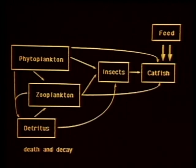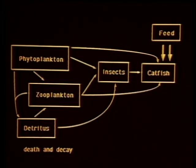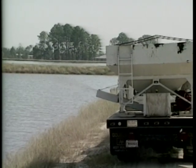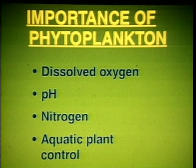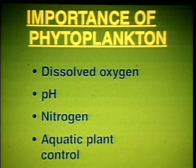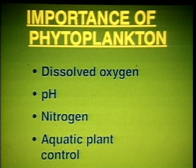Shown here is the food web present in a typical catfish pond. In this type of pond, planktonic organisms are less important as food sources since the fish are artificially fed. However, nutrient recycling by plankton in this case is important. Most production ponds which are fed have food webs such as this. In both fed and unfed ponds, phytoplankton influence overall water quality. Phytoplankton influences the level of dissolved oxygen, pH, and nitrogen. Specific examples of how phytoplankton is involved with these parameters will be included as they are discussed.